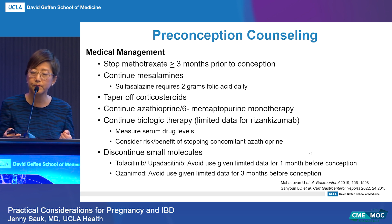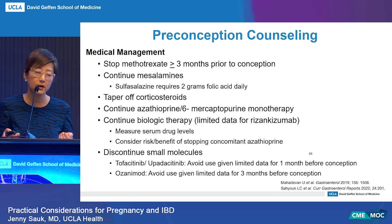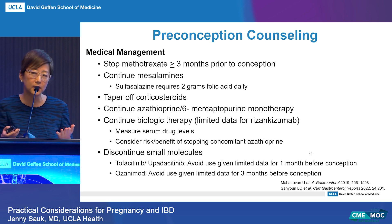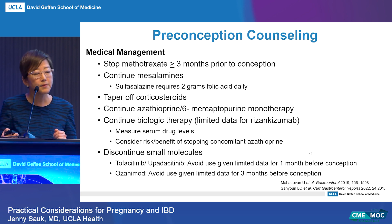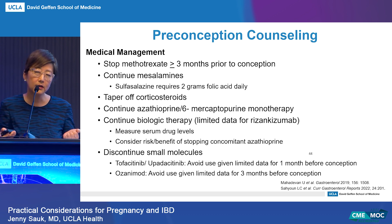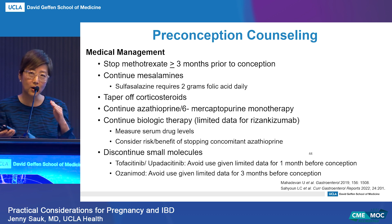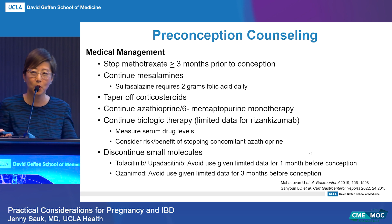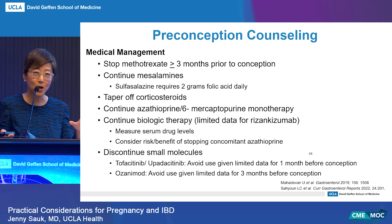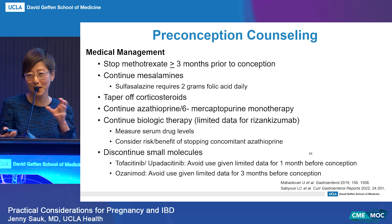There's not enough data right now to advocate for using small molecules in pregnancy. With tofacitinib and upadacitinib, animal studies have shown some suggestions of congenital malformations at higher doses, so we don't have enough data to support their use in pregnancy — you want to stop these one month before conception. The same applies to ozanimod, which has a longer half-life, so the thought is to hold it three months before conception. For patients of childbearing age who aren't yet planning a family, I may consider other therapies before these small molecules, even if they might be medically better options.